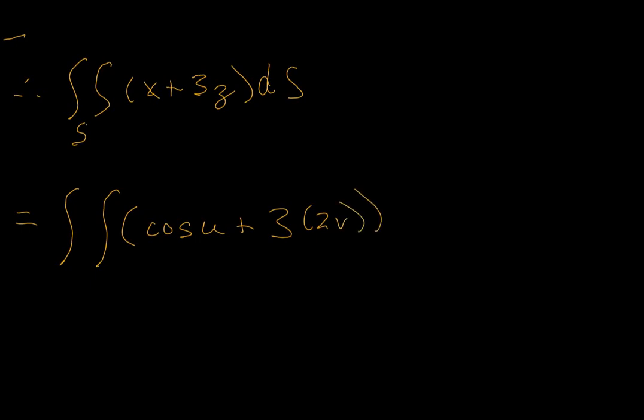The magnitude of that cross product was 2, and then this is with respect to v, then with respect to u. v goes from 0 to 3, and u goes from 0 to pi over 2.